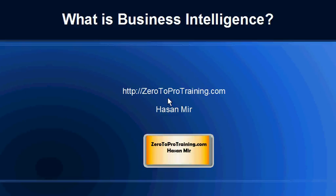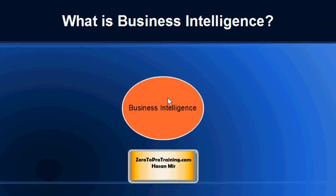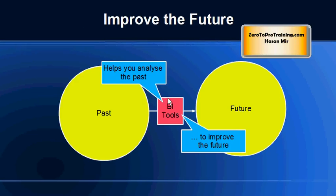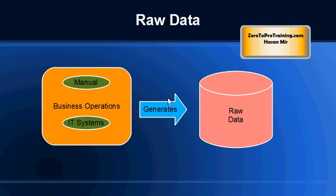In this session we will talk about what is business intelligence. This is Hassan Meir from zerotropro training.com. The real short answer is: business intelligence helps you analyze the past and come up with strategies to improve the future. Let's zoom into a diagram to find out how companies analyze their past and come up with strategies for the future, and how business intelligence — also known as BI tools — helps achieve all this.